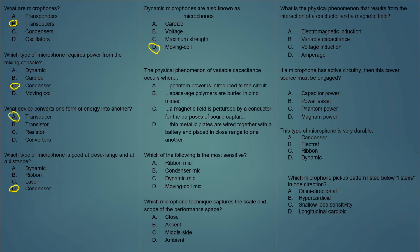The physical phenomenon of variable capacitance occurs when: A, phantom power is introduced to the circuit; B, space-age polymers are buried in zinc mines; C, a magnetic field is perturbed by a conductor for the purposes of sound capture; or D, thin metallic plates are wired together with a battery and placed in close proximity to one another? The answer is D — that's what a condenser microphone does. Which of the following is the most sensitive? A, ribbon mic; B, condenser mic; C, dynamic mic; or D, moving coil mic? The answer is B — condenser microphones are very sensitive.